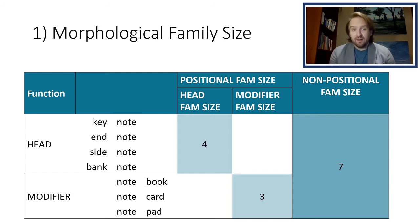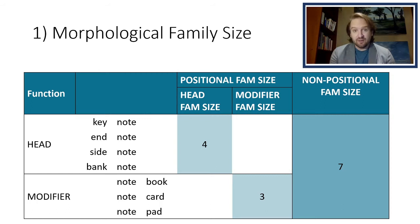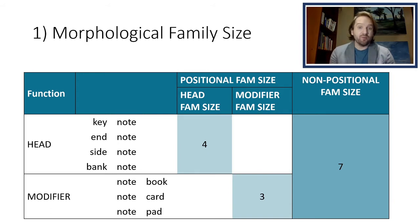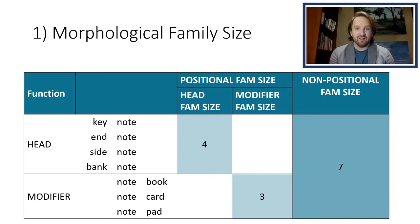Let's look at morphological family size and how it's counted. There are two different ways. First is positional family size, which takes into account the function that the constituent serves within the compound. So taking the example of note: note has a head positional family size of four — there are four words in which note is the head constituent, such as keynote, endnote, and so on. Its modifier family size is three, forming three compounds in which it is the modifier constituent. The non-positional family size is the total of both positional family sizes, in this case seven.